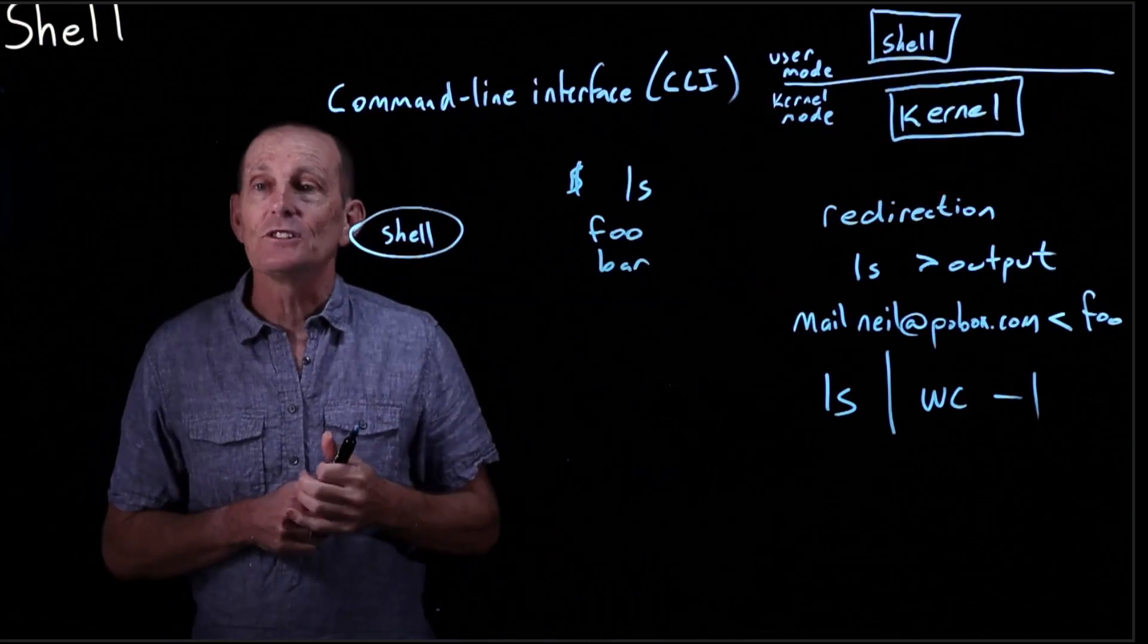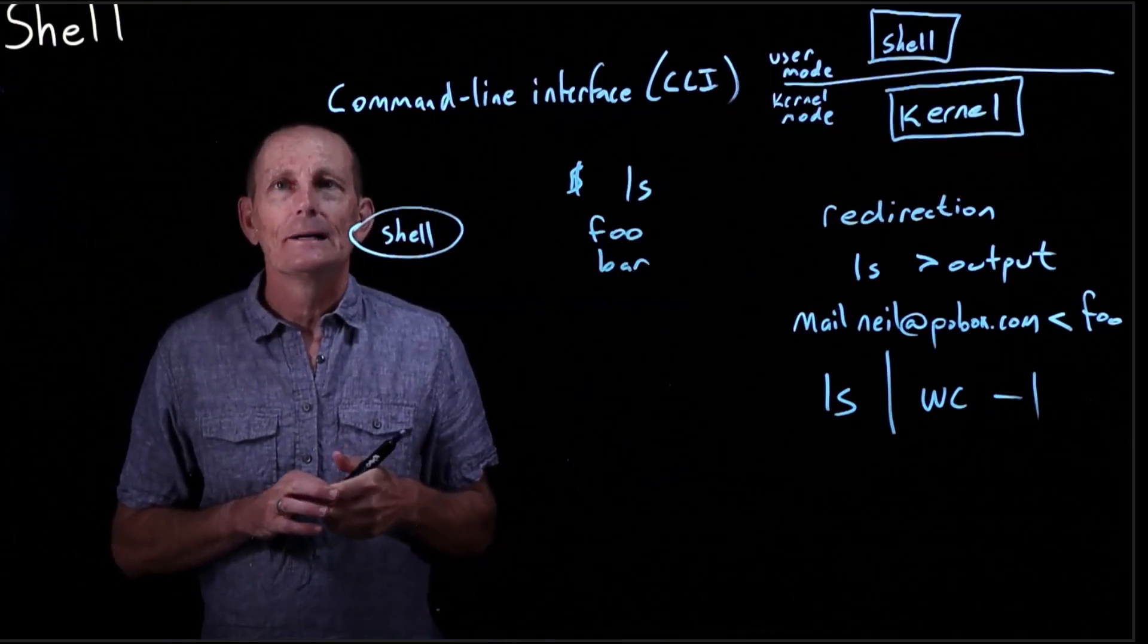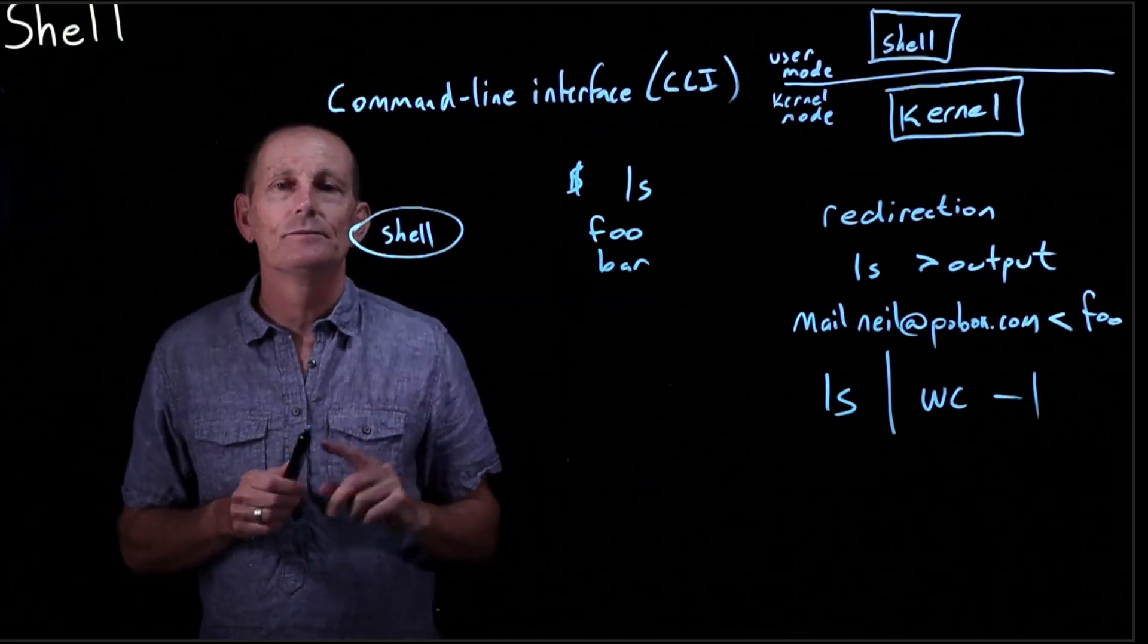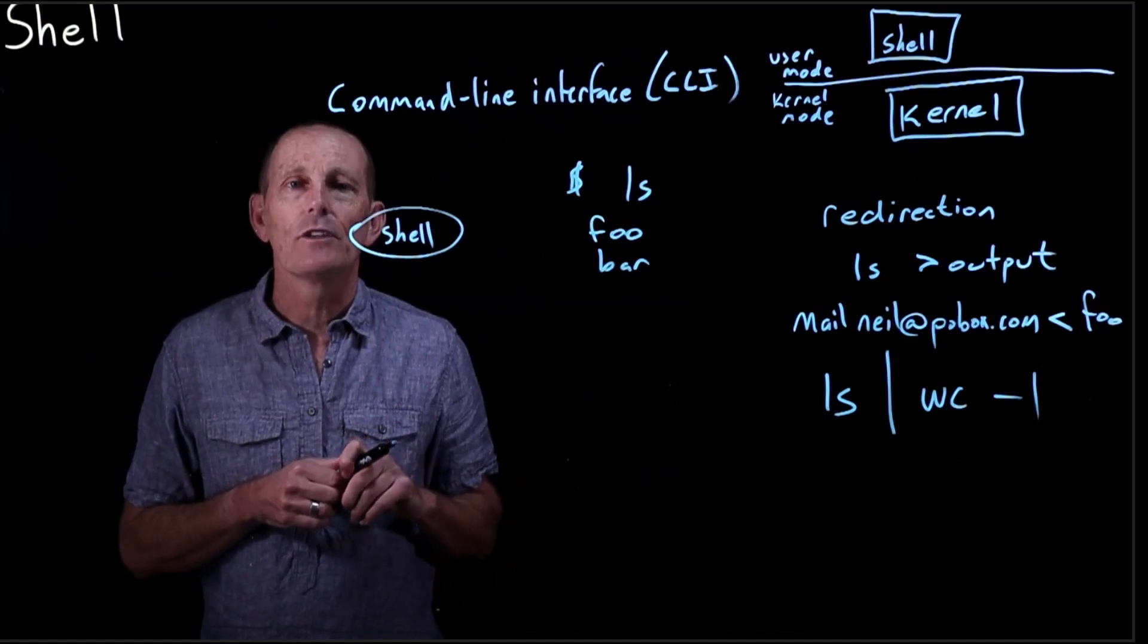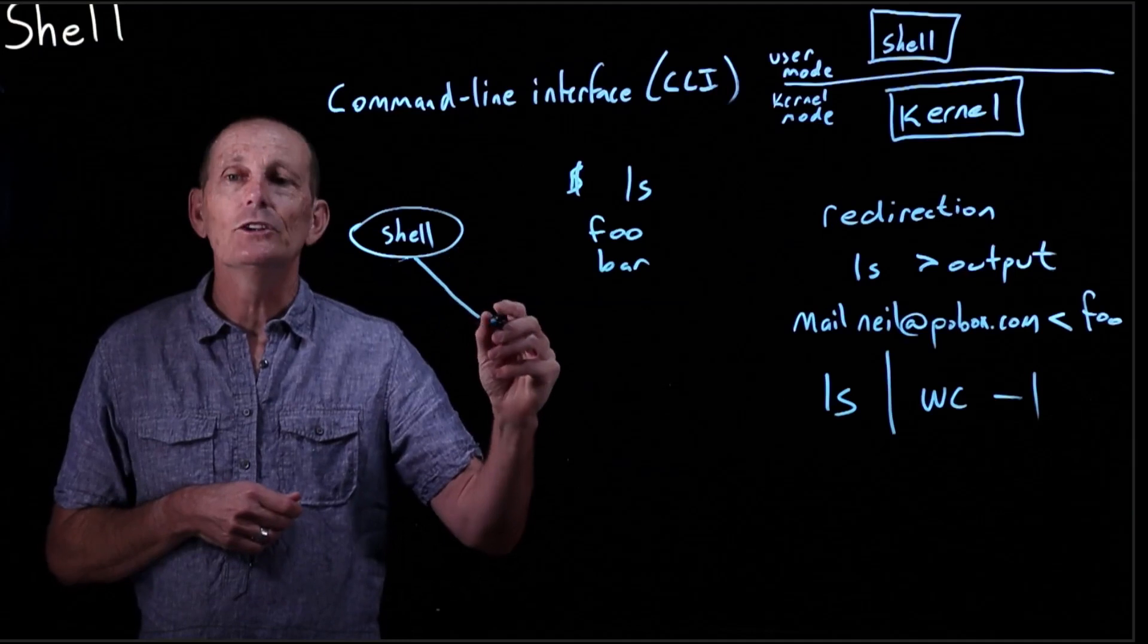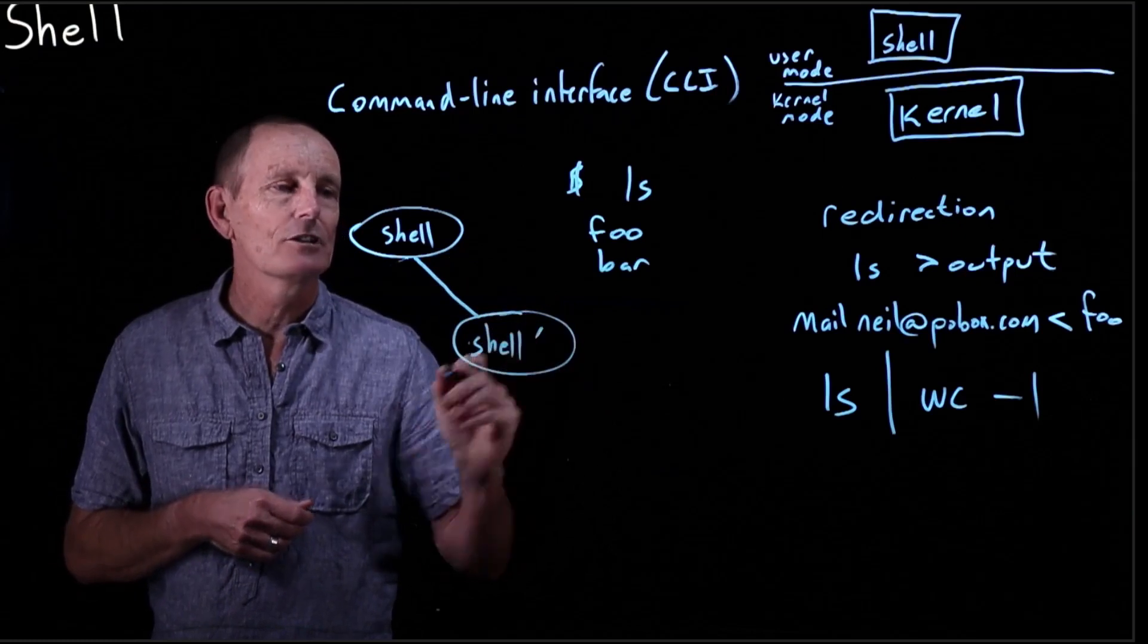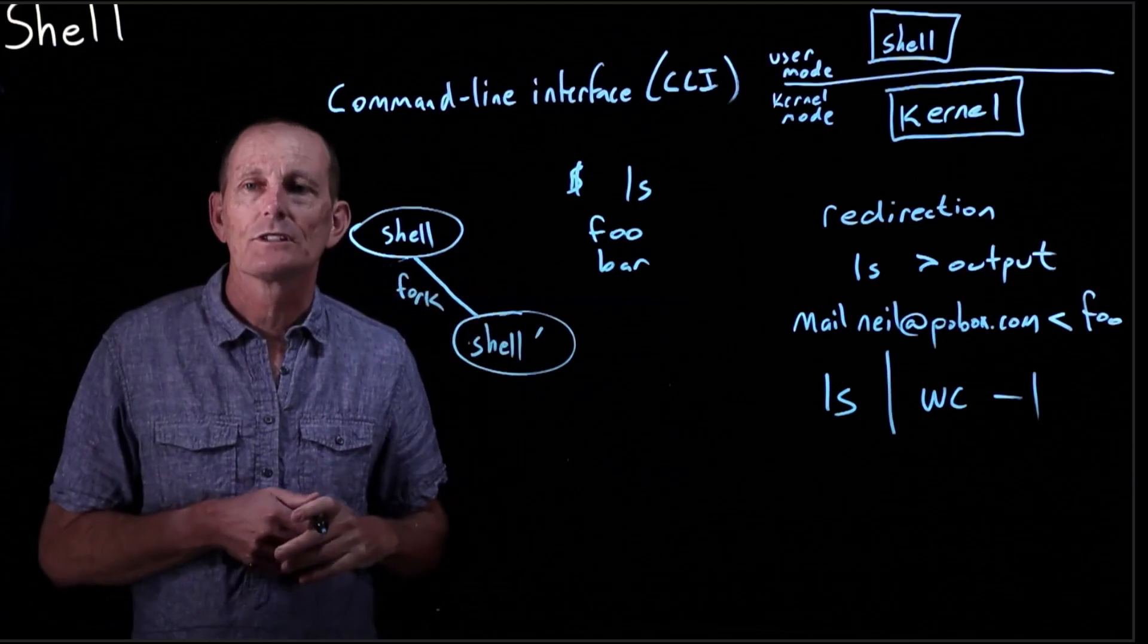How does the shell do that? Well, it turns out in Unix, there's no system call that says start up another process with another executable. Instead, those two things are broken down into two different things. So there's a system call called fork that will make a new copy of the currently running process. So now we have shell, shell, and I'm going to just call it shell prime, both running. So this is a result of the fork system call.